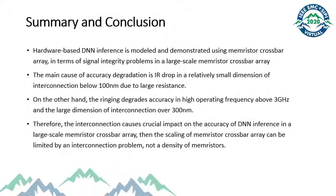This is the last page, the summary and conclusion. Hardware-based DNN inference is modeled and demonstrated using memristor crossbar in terms of signal integrity problems in a large-scale memristor crossbar. The main cause of accuracy degradation is IR drop in a relatively small dimension of interconnection below 100 nm due to larger resistance. On the other hand, the ringing degrades accuracy in high operating frequency above 3 GHz and the larger dimension of interconnection over 300 nm. Therefore, the interconnection causes crucial impact on the accuracy of DNN inference in a large-scale memristor crossbar. Then, the scaling of memristor crossbar can be limited by an interconnection problem, not the density of memristors.